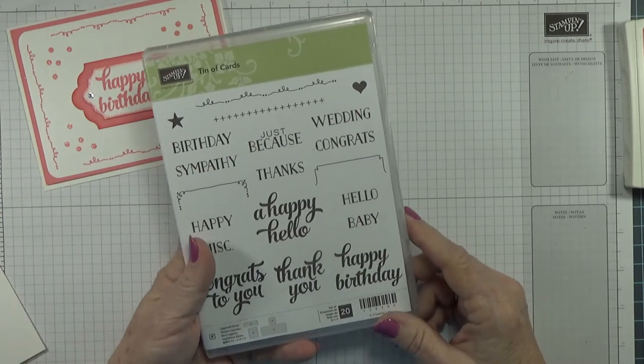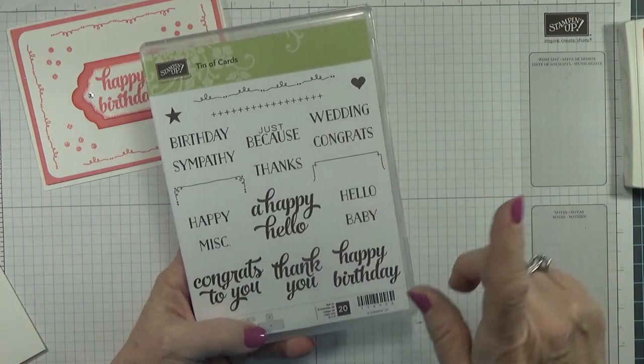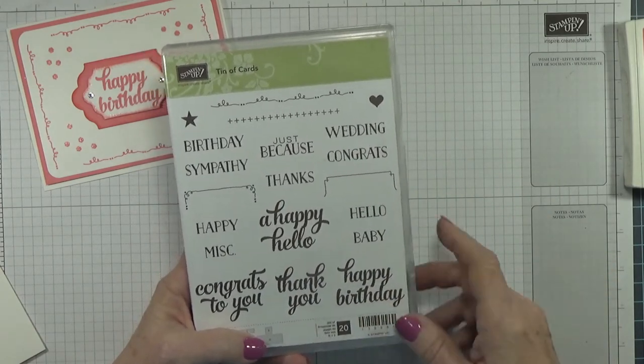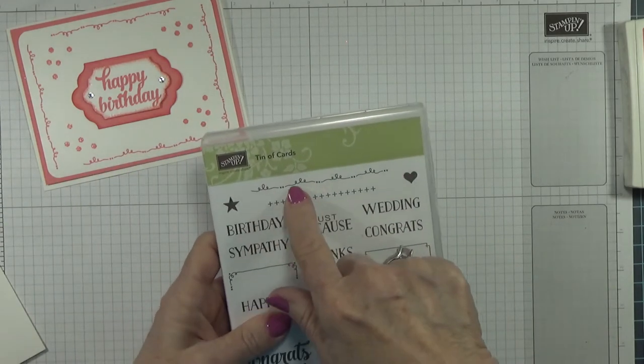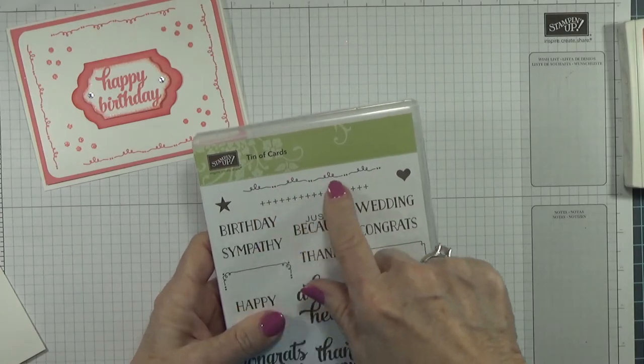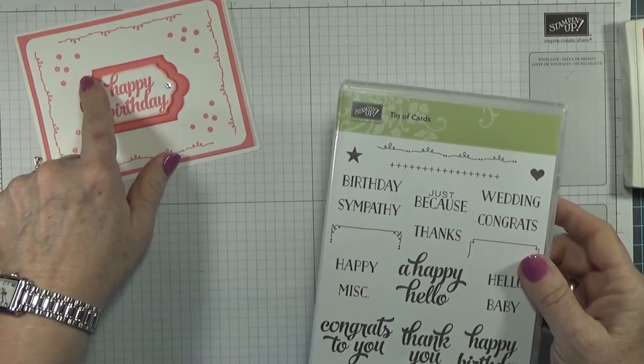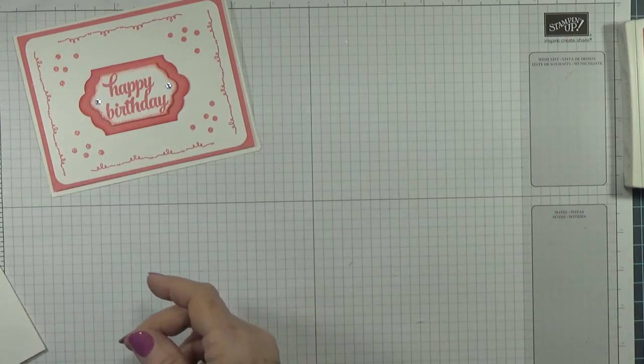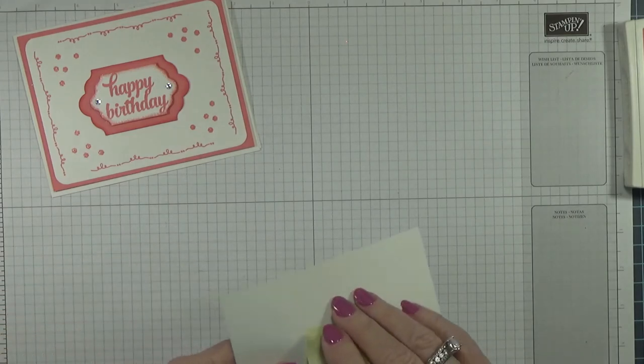I'm just going to use this little sequins stamp. I hope you got a hold of that while we did have the Celebration. I'm also using out of the Tin of Cards, the Happy Birthday stamp, and this little squiggly line to make the decoration around the outside.